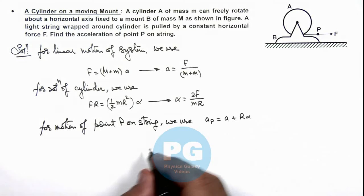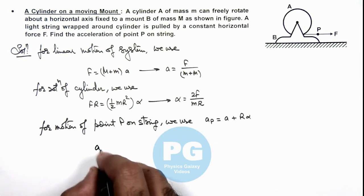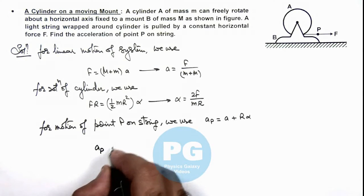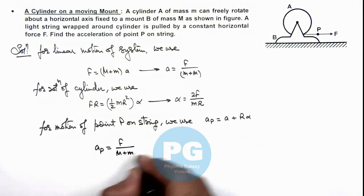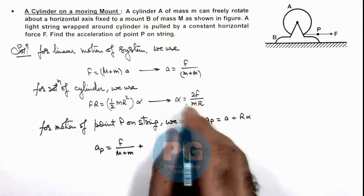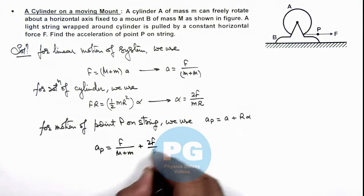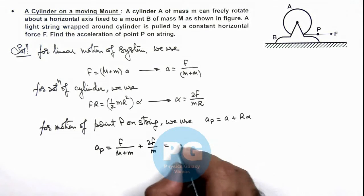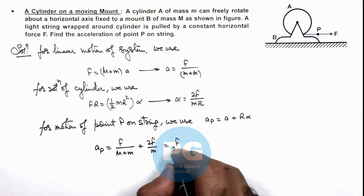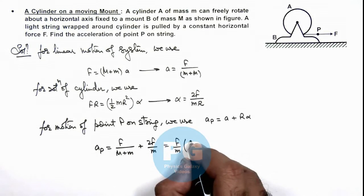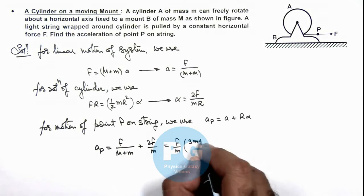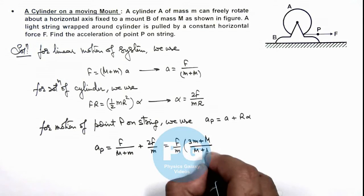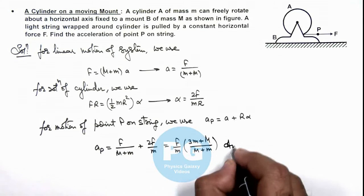Now in this situation, if we substitute the values of a and α, then acceleration of point P we are getting is F/(M + m) plus Rα will be 2F/m. And further solving it, we'll get the value of acceleration is (F/m) × (3m + M)/(M + m). That is the result of this problem.